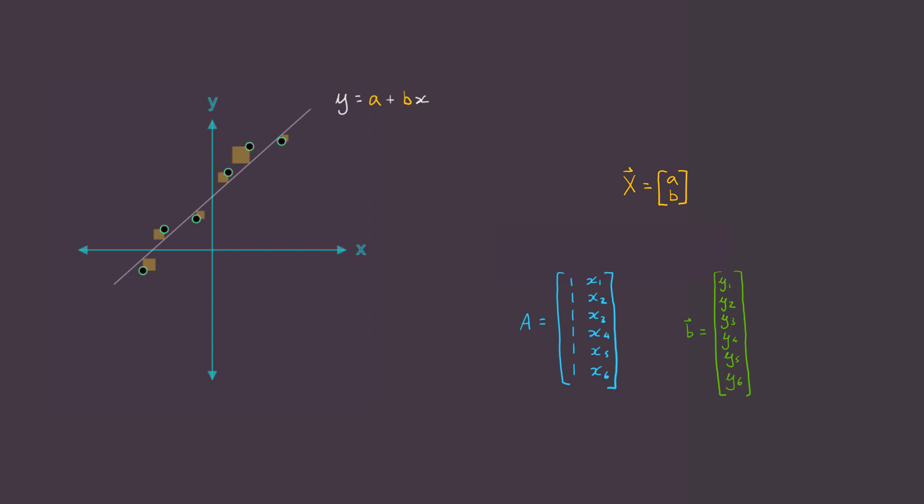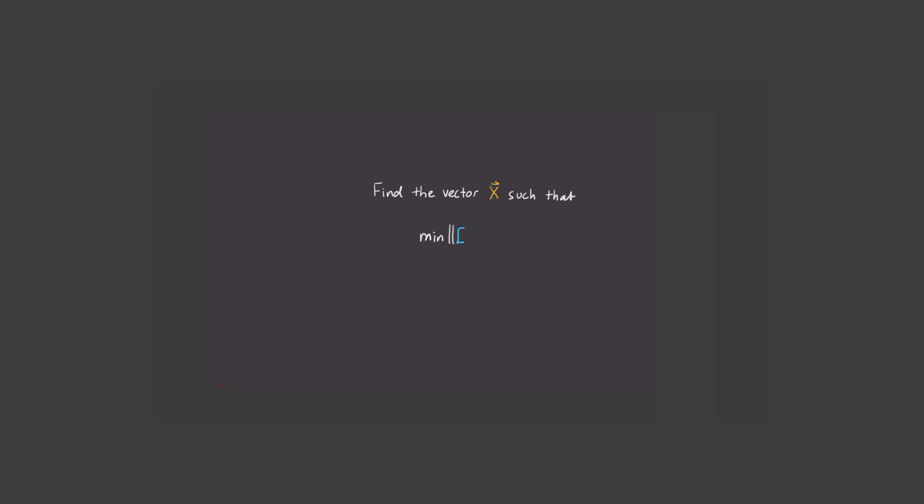We also showed that in order to find the best curve, it's necessary to find this vector x such that we minimize the norm of Ax minus B squared, where the matrix A and the vector B are given. We know what they are.